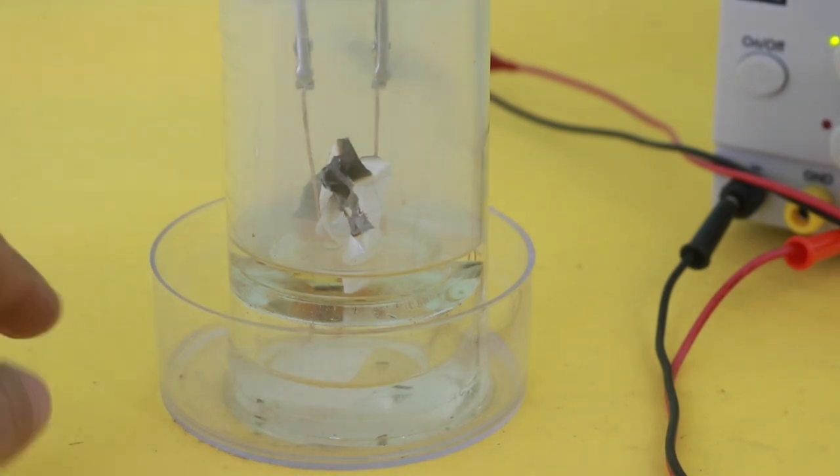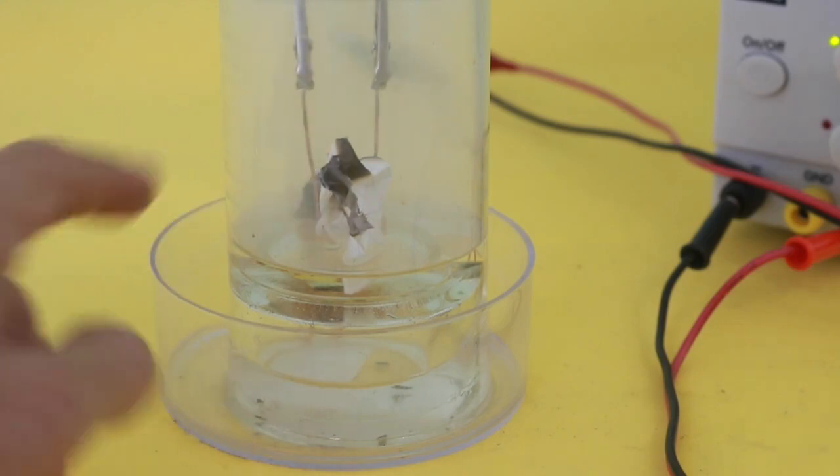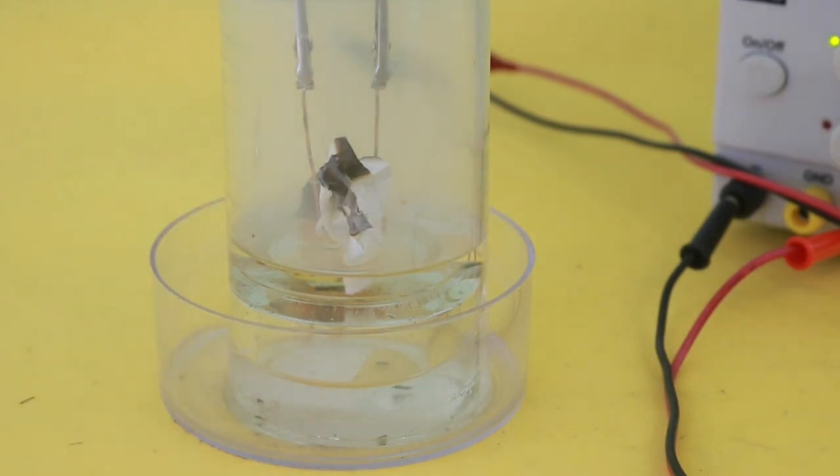You can see how the water level goes up. This is because when the oxygen is consumed, a partial vacuum is created inside the glass, therefore the atmospheric pressure pushes the water inside the glass. Let's now turn on the power supply.